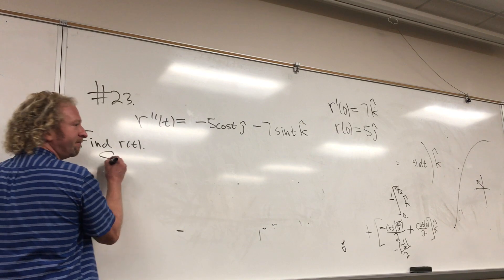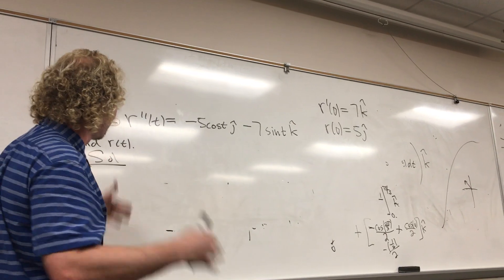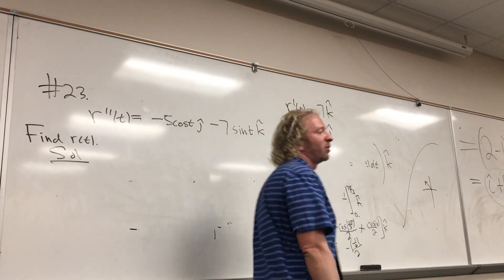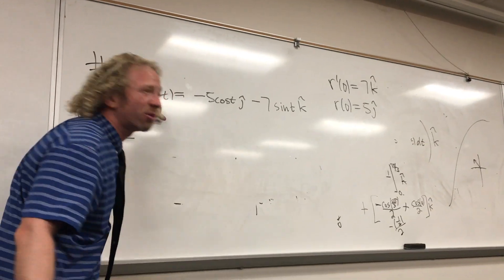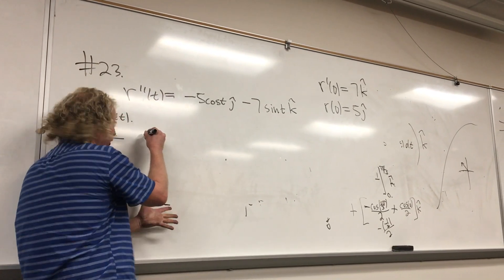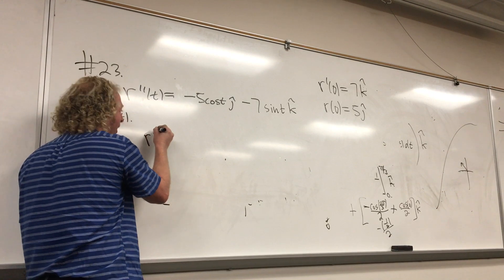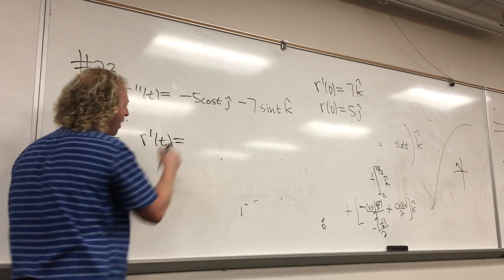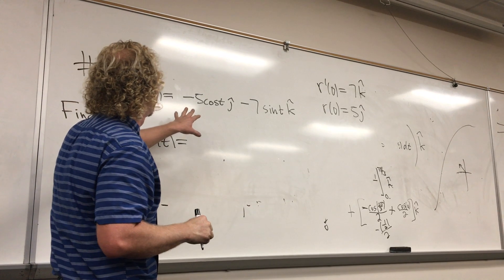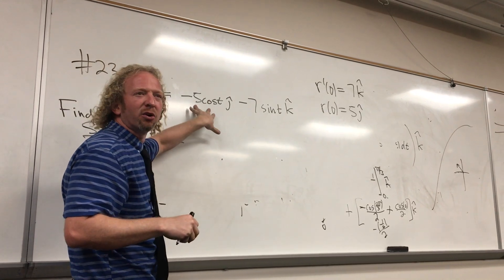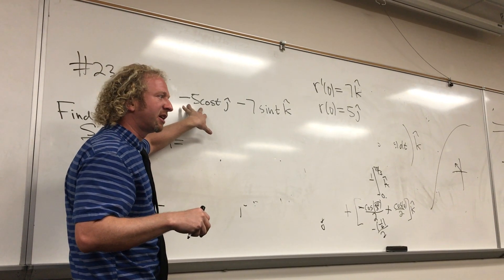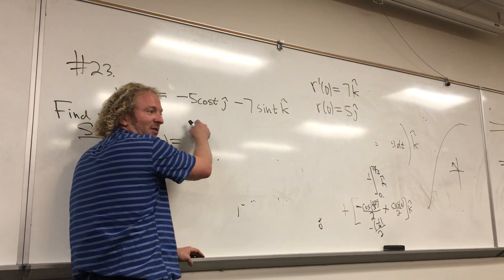All right, so solution. We have to find r. The natural thing to do is to integrate. When we integrate the second derivative, which derivative do we get? First — so r prime. So r prime of t. We're integrating negative cosine. That's just going to be negative sine. The derivative of sine is cosine.